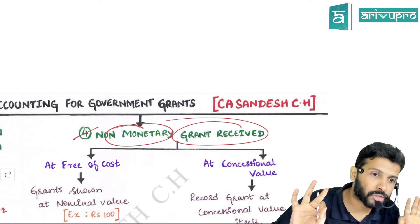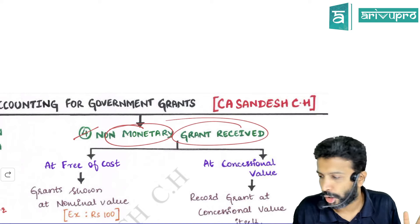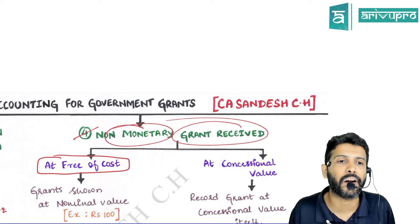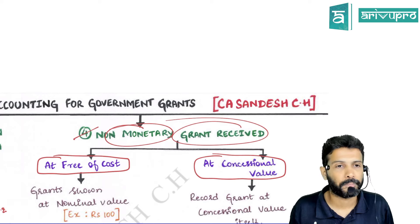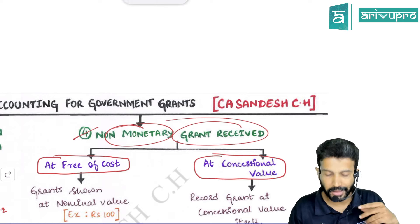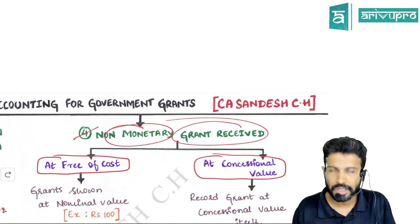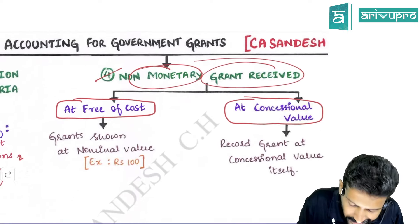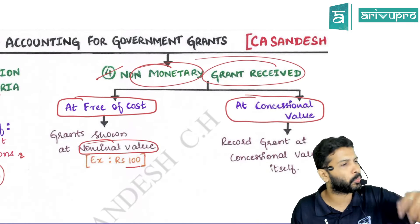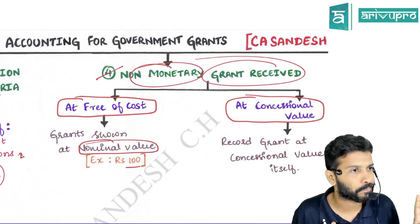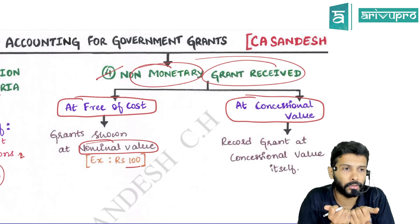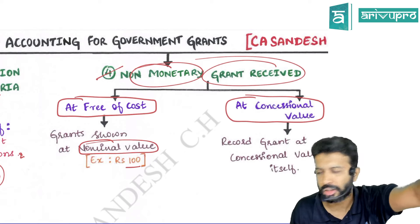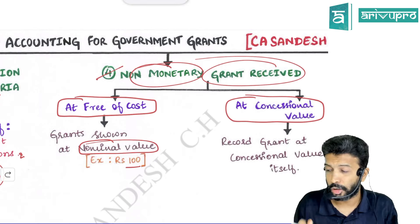If you receive a non-monetary grant at free of cost, you should still record it in your books at a nominal value — which could be 10, 100, or 1,000 rupees. This is only for the sake of disclosure, so that the asset gets reflected in your books. For example: land account debit to capital reserve, 100 rupees. The nominal value is just for record-keeping purposes.